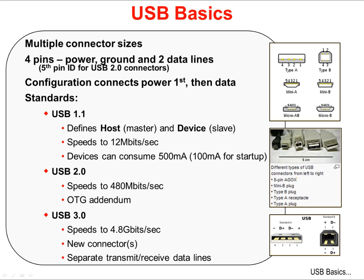USB 2.0 also includes the on-the-go addendum, where devices negotiate for host or device status. USB 3.0 supports speeds to 4.8Gbps. New connectors separate the transmit and receive data lines to support these higher speeds.